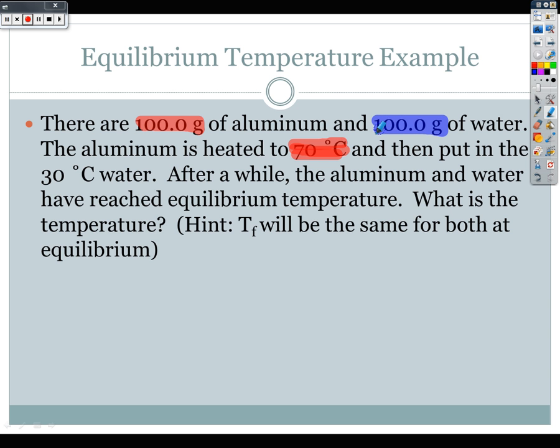And then I have my cold side with my water. I have 100 grams of water, but it's initially at 30 degrees Celsius. And I'm going to need specific heats, but those are going to go together. So 100 is going to go with 30 and then 100 is also going to go with 70.